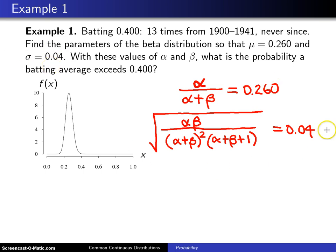Now what we have here is two equations, two unknowns, and I won't take you through the algebra, but alpha turns out to be 31.005 and beta turns out to be 88.245.